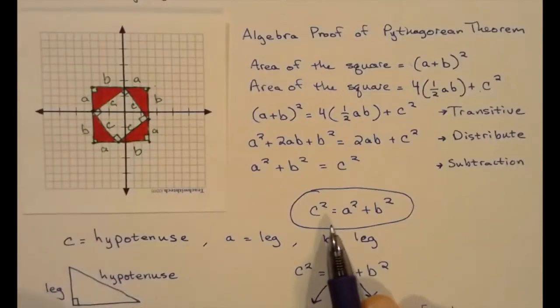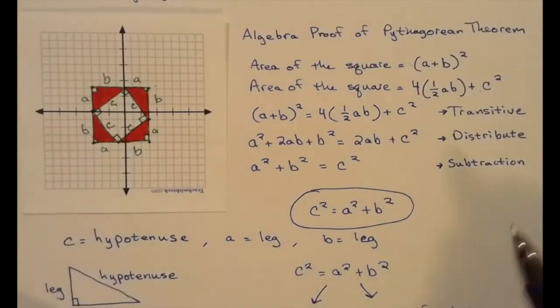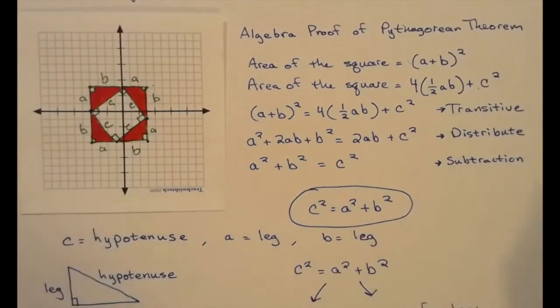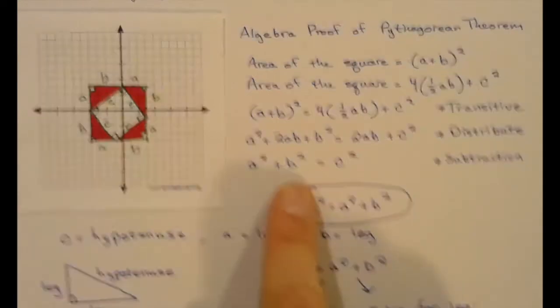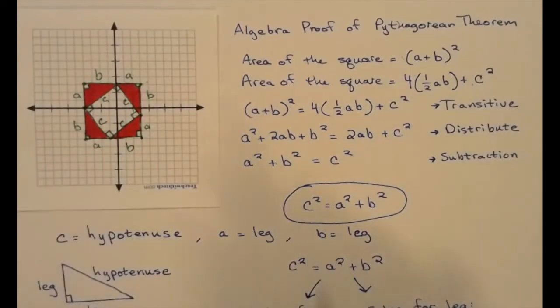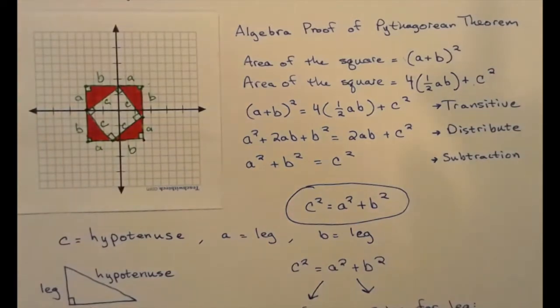Now, I like to write the Pythagorean Theorem as c² = a² + b². It's the same thing, but we'll see in the next section why it's sort of convenient to have c² on the left. It doesn't really matter in this section, but it's more convenient in the next section.